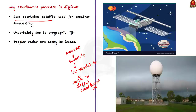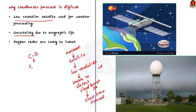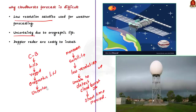Cloudbursts also happen within a few hours, making it very difficult to capture images in time. The second reason is uncertainty. Cloudburst in India mainly happens in rugged terrain regions like the Himalayas, northeastern hills, and Western Ghats. When moisture-laden winds hit the hills and undergo orographic lift, the weather becomes highly uncertain. This uncertainty happens within a very small time frame, making forecasting of cloudburst very difficult.